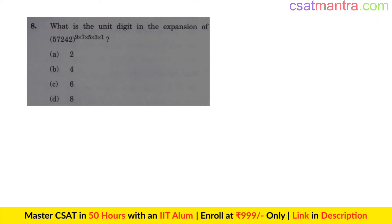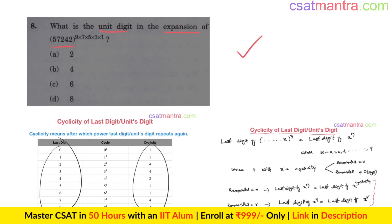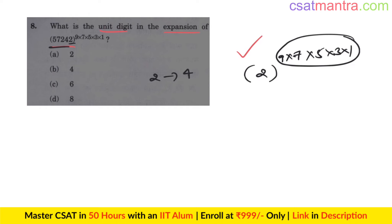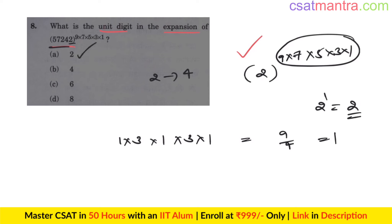Next: what is the unit digit in the expansion of this expression? This is a number system question using the cyclicity concept, discussed in the miscellaneous concepts lecture. The unit digit of the expansion is the unit digit of 2^(9×7×5×3×1). The cyclicity of 2 is 4, so divide the exponent product by 4 using the remainder theorem. 9÷4 gives remainder 1, 7÷4 gives 3, 5÷4 gives 1, 3÷4 gives 3, 1÷4 gives 1. The product of remainders 1×3×1×3×1 = 9; 9÷4 gives remainder 1. So unit digit is 2^1 = 2. Answer: A.